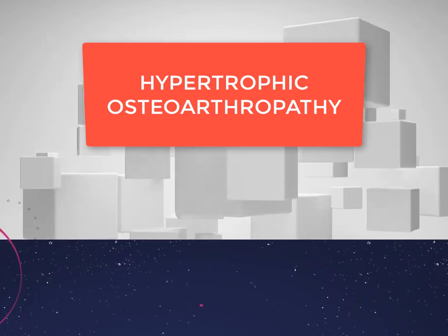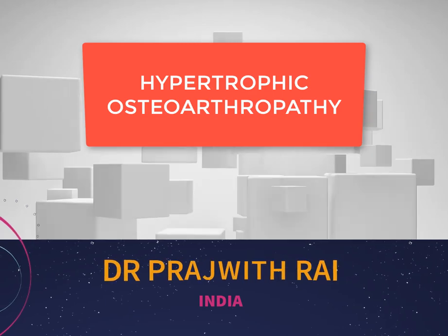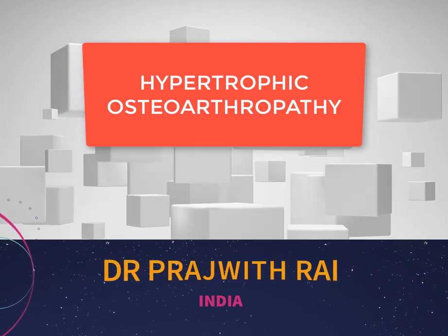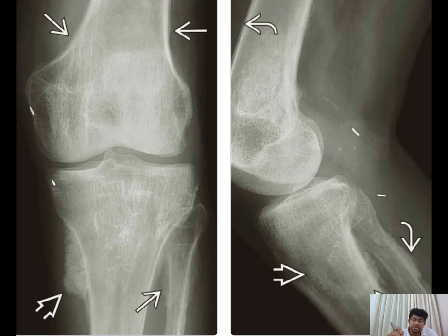Hypertrophic osteoarthropathy is a syndrome associated with the proliferation of skin and bone. Mainly what we see here is the periosteal reaction. The periosteal reaction can be a dense linear symmetrical periosteal reaction; it can be exuberant, fluffy, or linear in type.